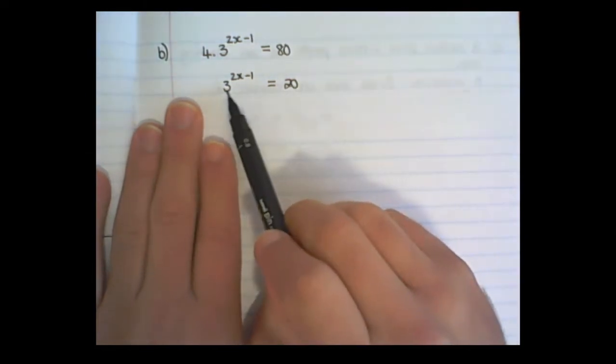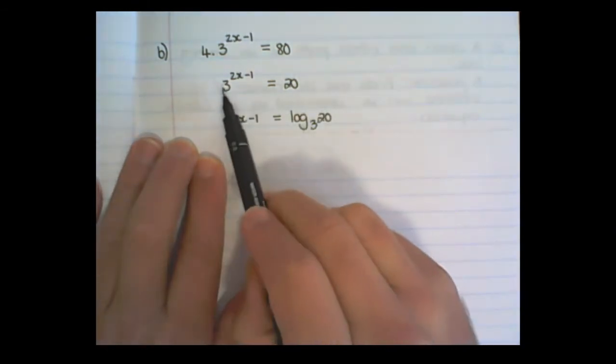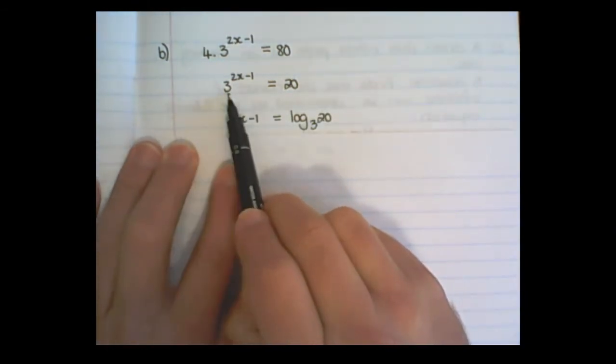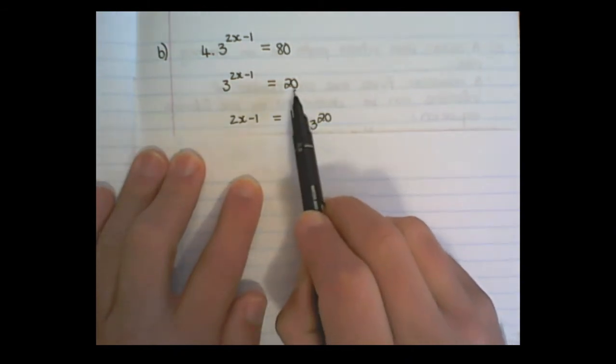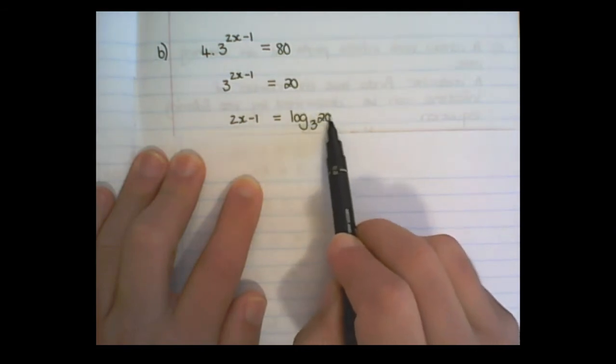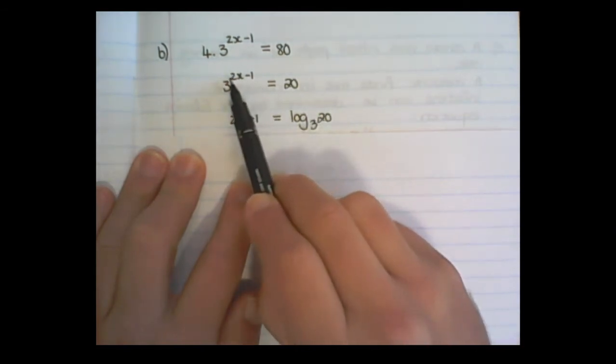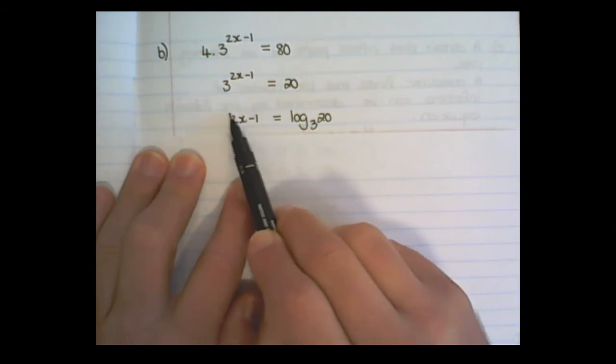Now I want to get rid of the base. So the base of the exponent becomes the base in the log. That part which it is equal to becomes the argument. And then 2x minus 1 becomes the subject.